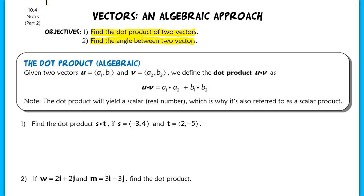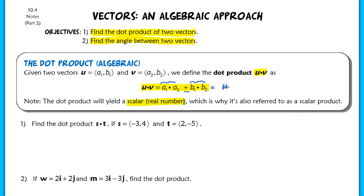If we are given two vectors u and v, we define the dot product u·v as follows. All we're doing is finding the sum of two different products: the product of the horizontal components of the vectors and the product of the vertical components. After you find those two products, you add them, and it yields just a real number — a scalar. That's also why it's referred to as a scalar product.